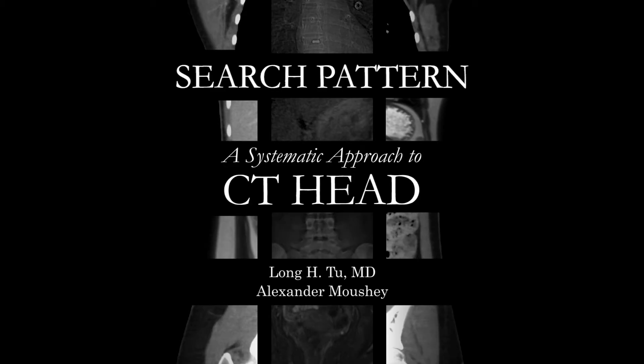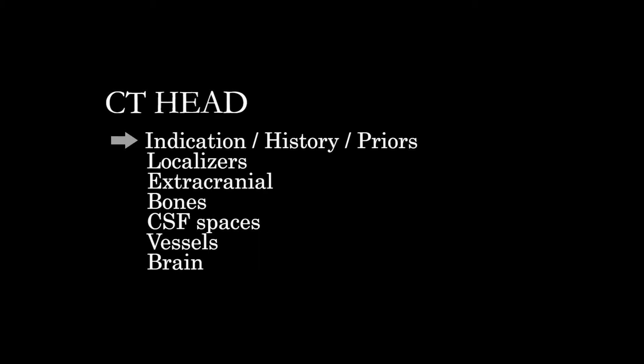Today we're going to talk about the basic approach to a non-contrast CT head. As usual, we're going to start off understanding what the patient situation is like — the history, the indication. We'll look at prior studies, CT and MRI including the head. And then for due diligence, you'll take a look at the localizers, any areas that are not imaged within the cross-sectional images of the CT head. And then what I basically like to do is, big picture, use an outside-in approach.